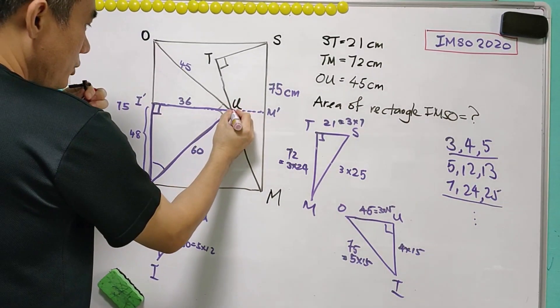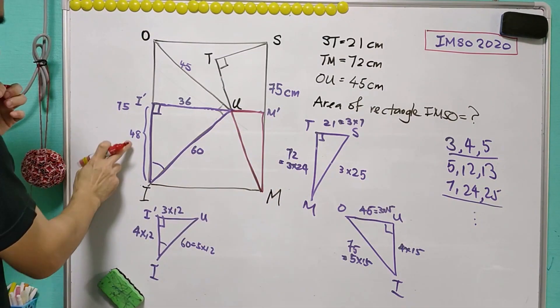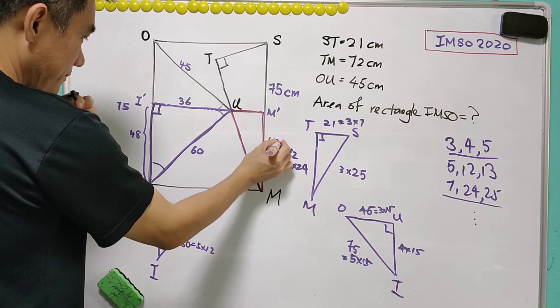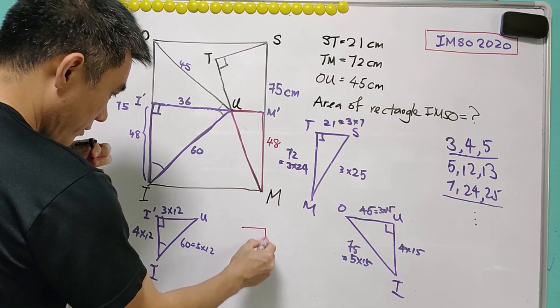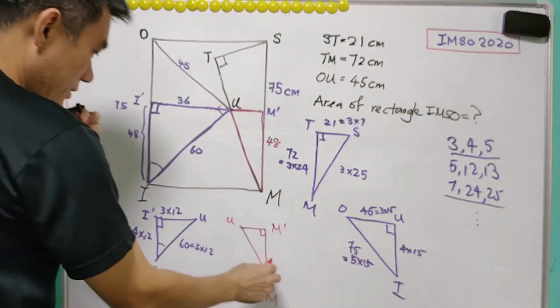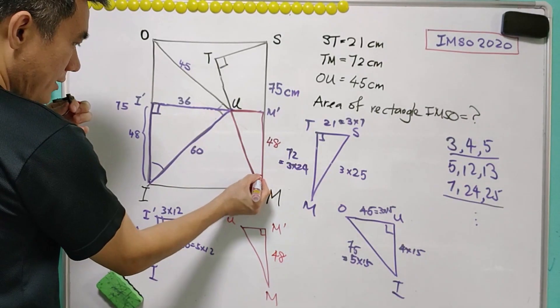Now we focus on this triangle UM'. I'I is 48, M'M also equals 48. So maybe I'll write it here: M'M is equal to 48. Now we look at this angle here.